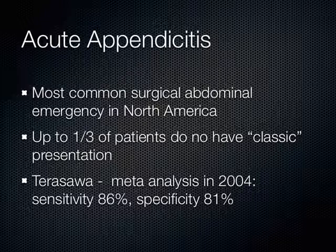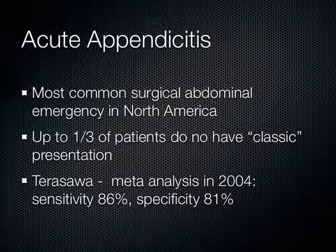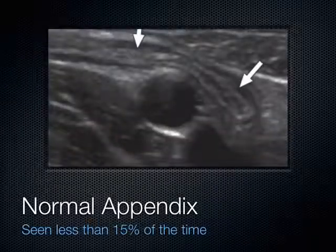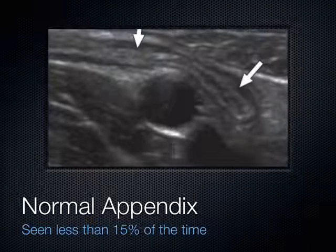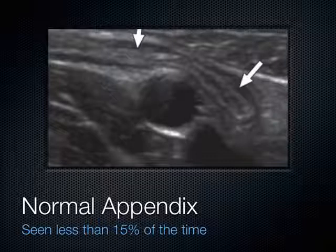The average age of someone who gets appendicitis is 27 years old. A meta-analysis by Terasawa found that in the hands of radiology, ultrasound had a sensitivity of 86% and a specificity of 81%. The reason for the lower specificity is that we can only see a normal appendix about 15 to 20% of the time. It's hard to see a normal appendix, but to see an abnormal appendix on ultrasound is actually pretty good, which is why the sensitivity is a little better.